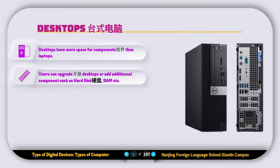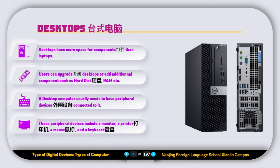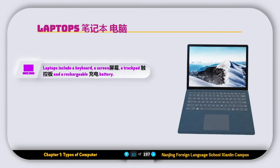The next type is desktop computers. Desktops have more space for components than laptops, and users can upgrade the desktop or add additional components such as hard disk, RAM, etc. Desktop computers usually need peripheral devices connected to them. The peripheral devices include a monitor, a keyboard, a mouse, etc.